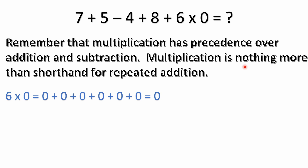All right, so first of all, remember that the order of operations applies here and that multiplication has precedence over addition and subtraction. Multiplication is nothing more than shorthand for repeated addition. So with that in mind, the multiplication is first. 6 times 0 is the same thing as adding six 0s — 0 plus 0 plus 0 plus 0 plus 0 plus 0 — and no matter how many 0s you add, they're always going to equal 0. So 6 times 0 is equal to 0, and that's the very first step.